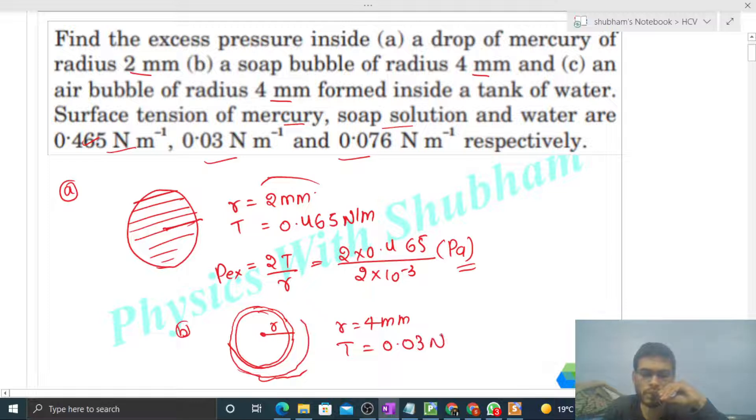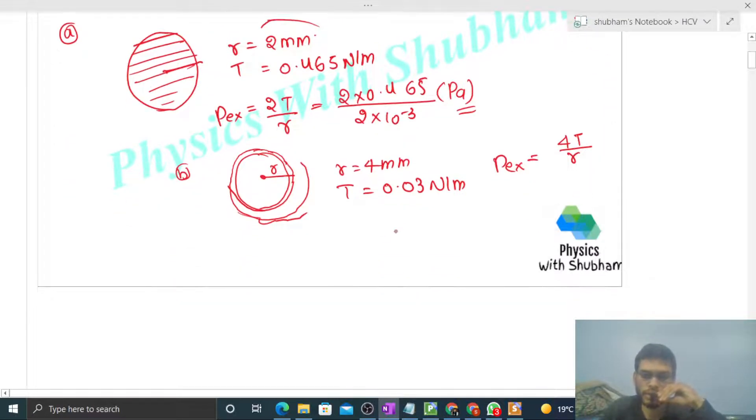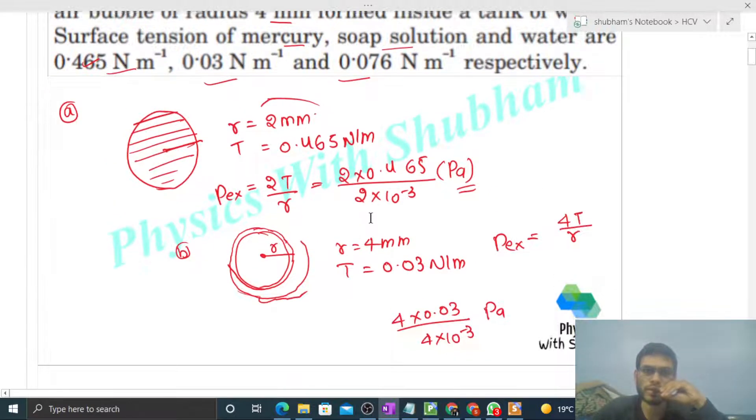So what is excess pressure inside any soap bubble? That is equal to 4 times the tension divided by radius. So just put the values: this will be 4 into tension, that is 0.03, divided by radius, that is 4 into 10 raised to the power minus 3. This will be in Pascal.